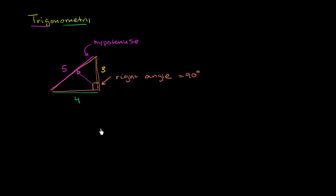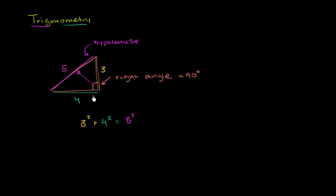You probably learned that already from geometry. And you can verify that this right triangle's sides work out. We know from the Pythagorean theorem that 3 squared plus 4 squared has got to equal the hypotenuse squared, which is 5 squared. So this satisfies the Pythagorean theorem.